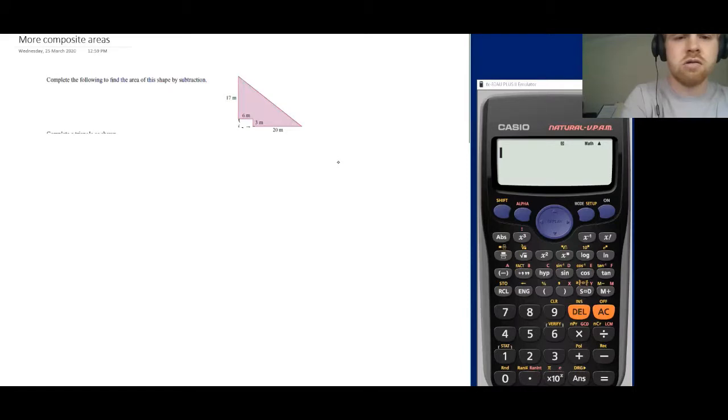So I'm going to call the big triangle A1 and the little rectangle A2. My area in total is going to be A1 take away A2. This first step of working is the most important step because it tells you how you're going to proceed with the rest of the question. We don't want to dive into calculations. We want to set ourselves up for success before we calculate anything.